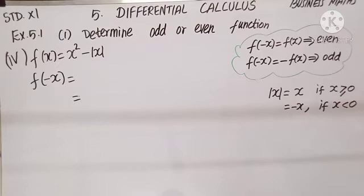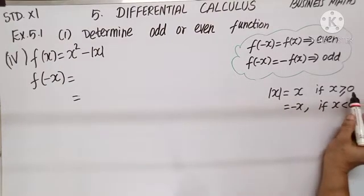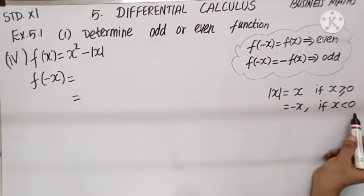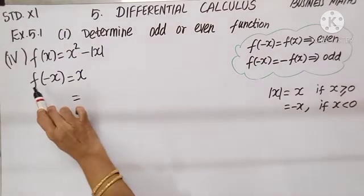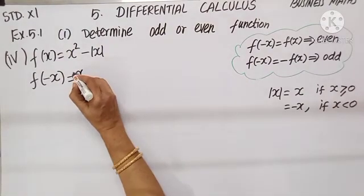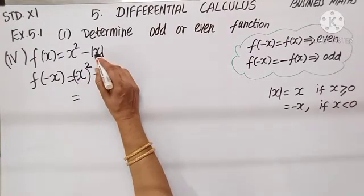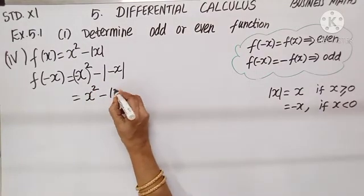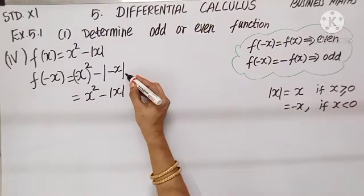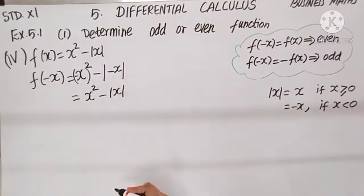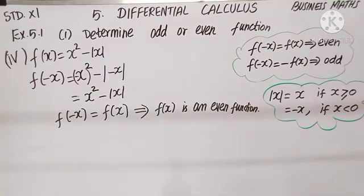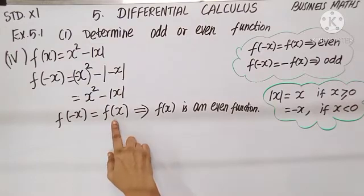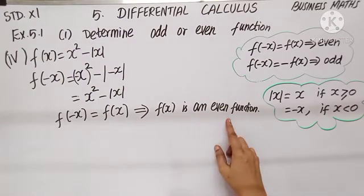Fourth subdivision: f(x) = x² - |x|. Remember, |x| equals x if x is positive, and minus x if x is negative. Let us find f(-x): (-x)² - |-x|. The answer is x² - |x| only, because in modulus, even if minus comes, I change it to plus. So I get the same result. Since f(-x) = f(x), we declare f(x) is an even function.